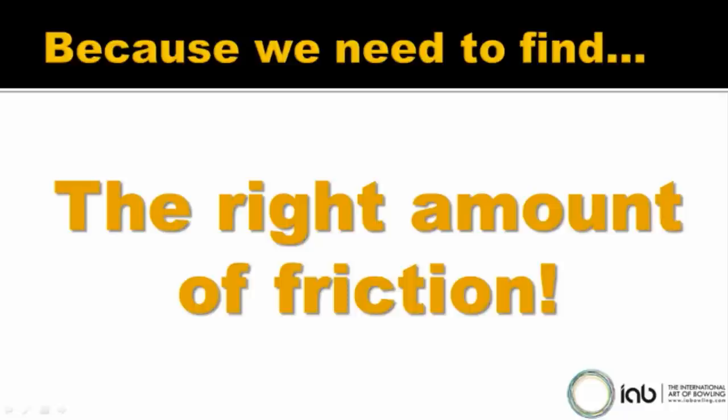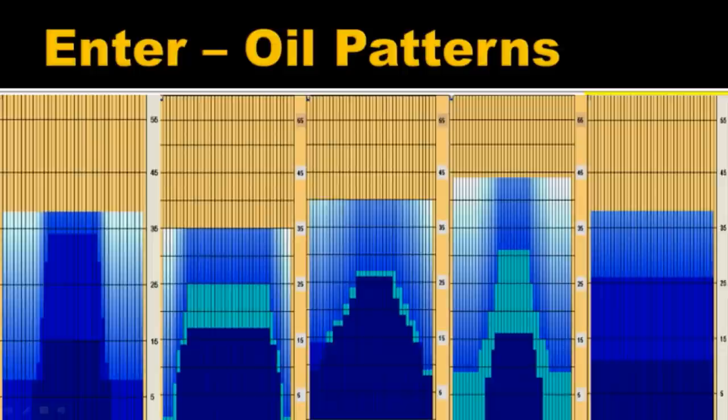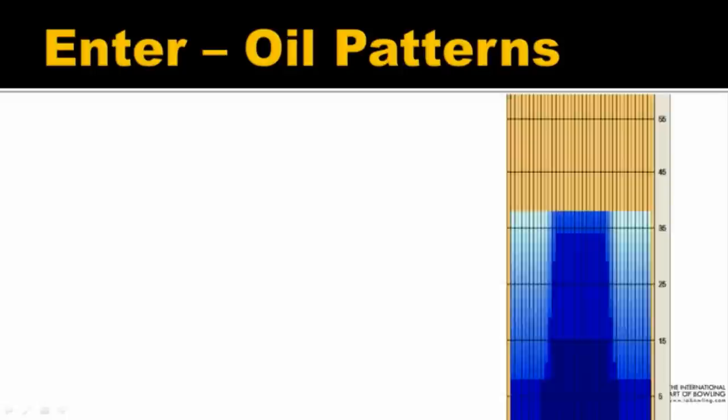And that's where we bring oil patterns into the equation. Somebody worked out a long time ago that if you placed more oil in the centre of the lane — because that's where most people played — you not only protected that part of the lane better, but you made the lanes a little bit easier to play. If we look at the five patterns on the screen here, the pattern on the left is a typical house shot — that's Easy Street by Kegel. Moving to the right, we go through various lengths and various difficulties. To the right-hand side is the US Open pattern, which is dead flat and extremely difficult. But for today, we're going to look at the house shot.